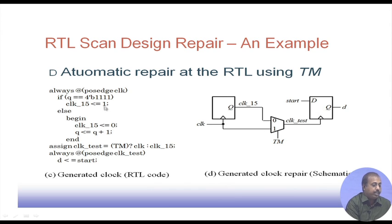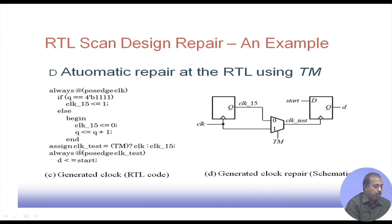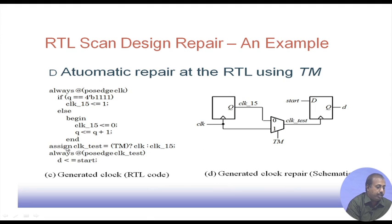The RTL design is modified at the RTL level itself. The new RTL code introduces an assign statement: assign clock_test = (tm) ? clock : clock15. If tm is high, clock_test gets clock; if tm is low, clock_test gets clock15. This correction is inserted as a line in the RTL code by the RTL repair tool.